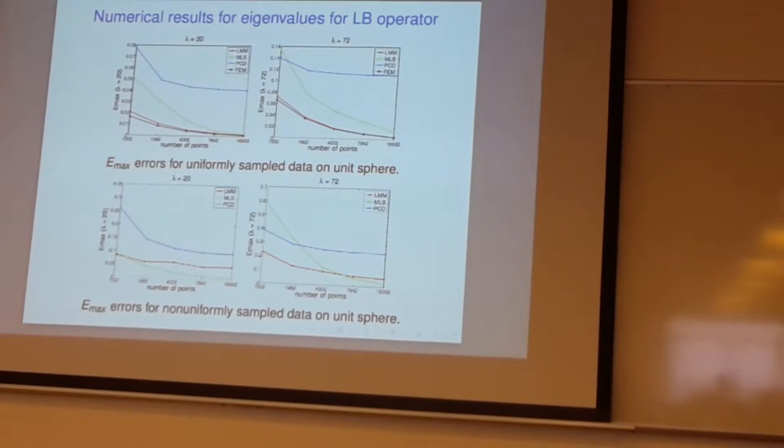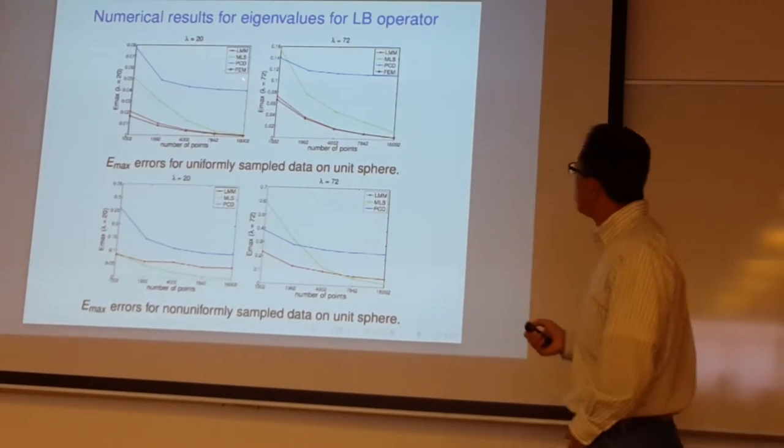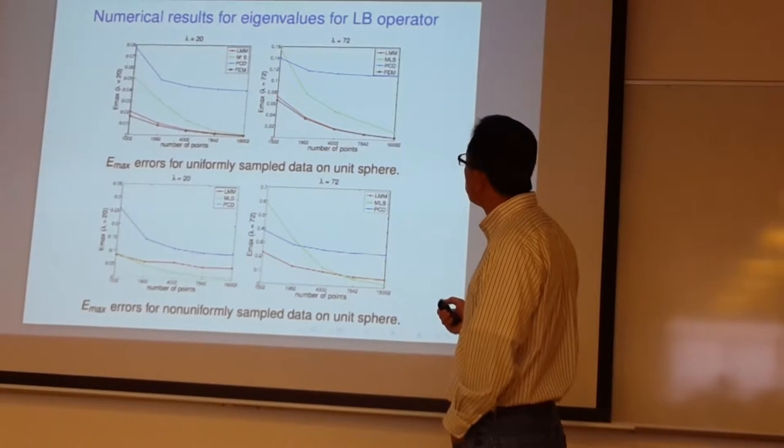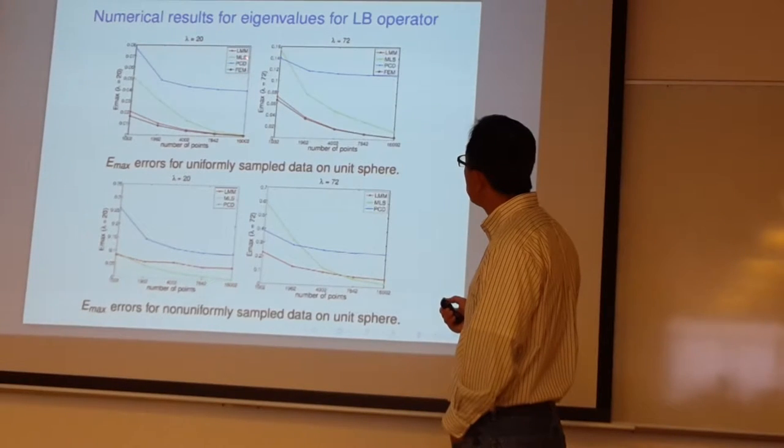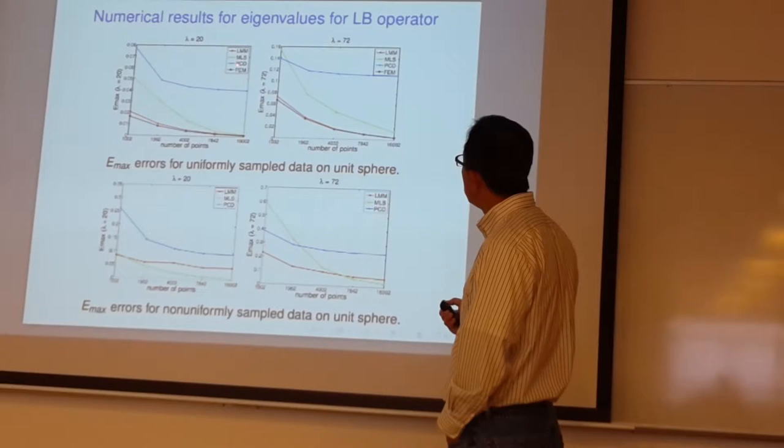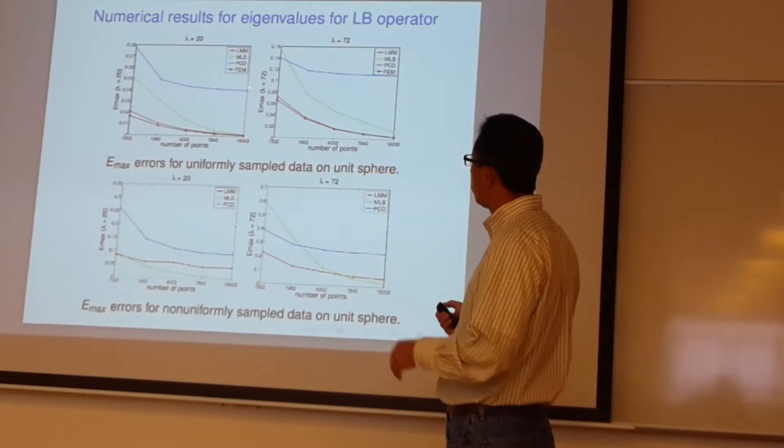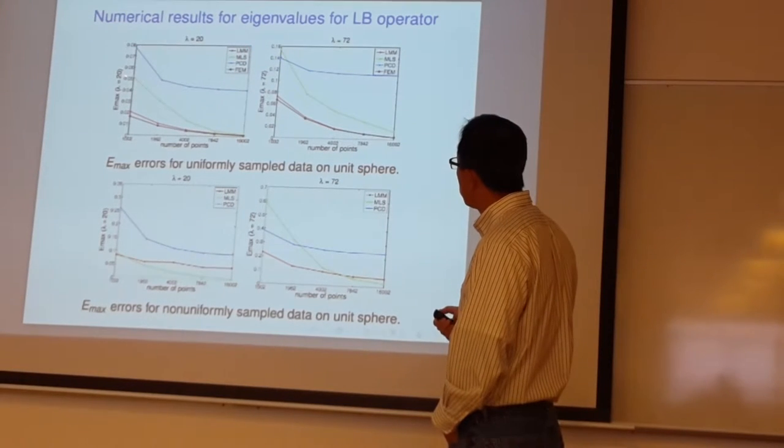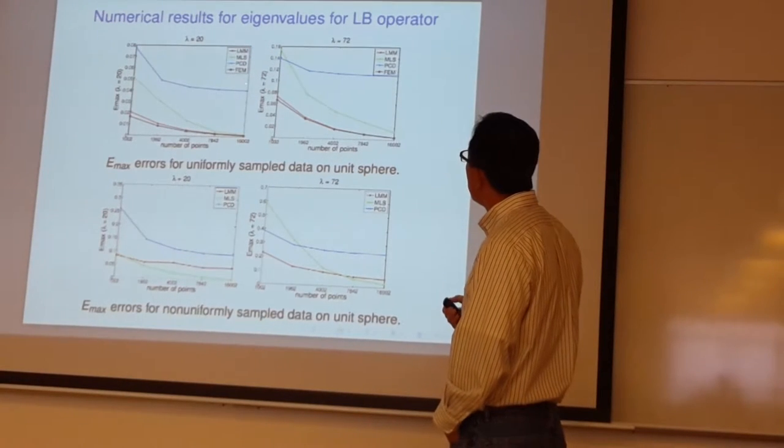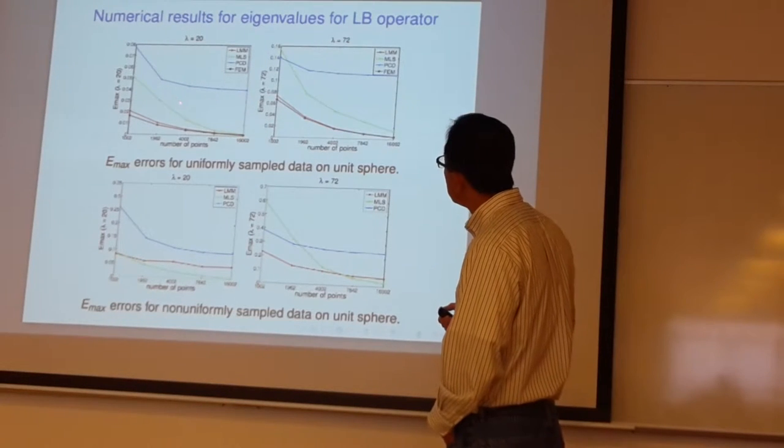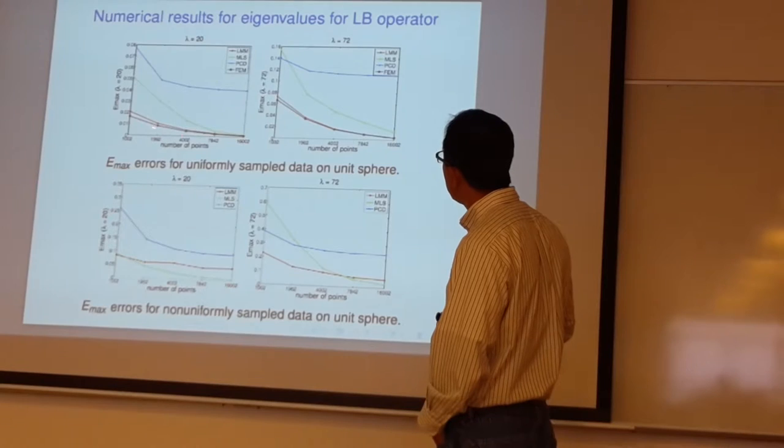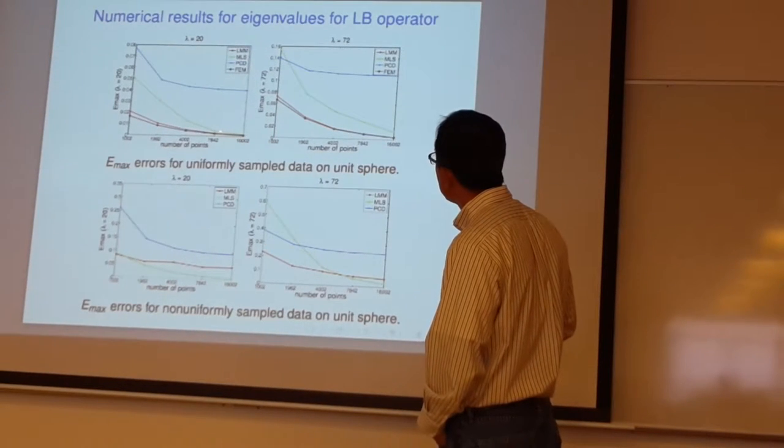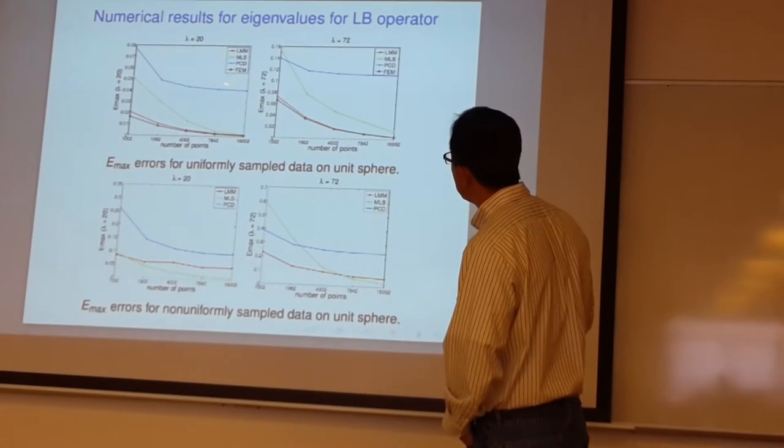This is showing our performance versus point cloud. This is by Belkin, Sun and Wang. This is our moving least square. This is finite element. And this is local mesh - we also later developed local mesh. You can see moving least square and local mesh method roughly behave similarly. In this case, finite element method and local mesh method and this is our moving least square method and this is the point cloud. This convergence is slowest.